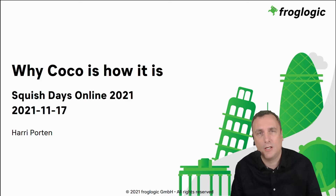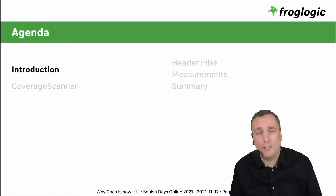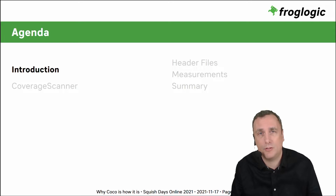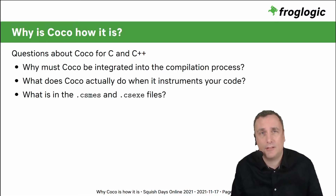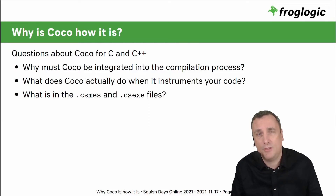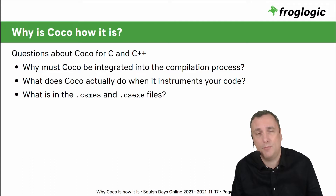We'll look at the main tool Coverage Scanner, cover the question of what about header files which are a bit special for code coverage, and talk about how measurements are made. As an introduction, I've listed why COCO must be integrated into the compilation process, what actually happens when the tool is part of your compilation process, and what those two files — CSMES and CSEXE — are.